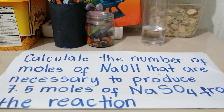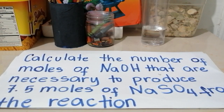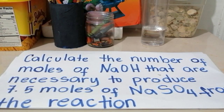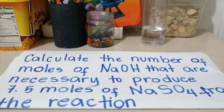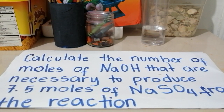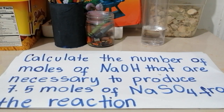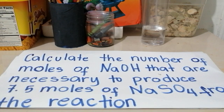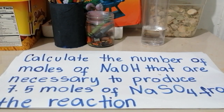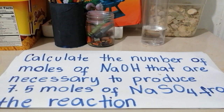First, we need to write the complete balanced equation. Next, you have to convert from the given units to moles, and then convert the moles of the given quantity to moles of the desired quantity — or sometimes we also get the grams or the weight. So this is about weight-to-weight calculation also. Those are the things that you need to remember.